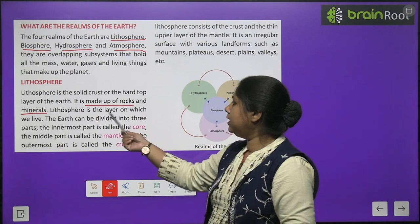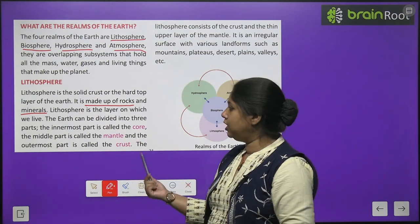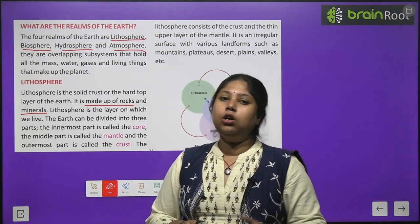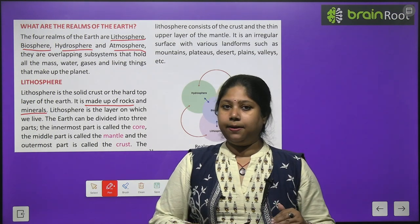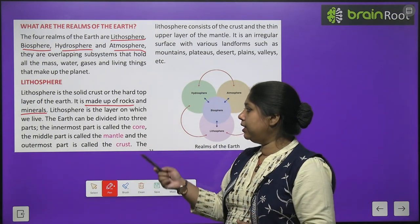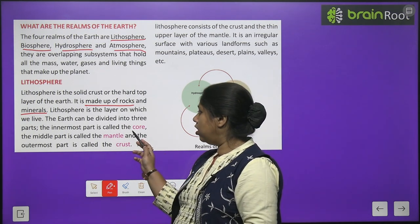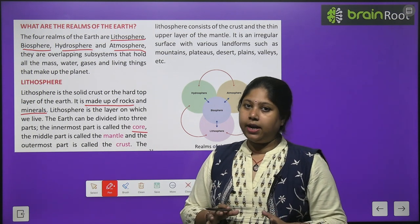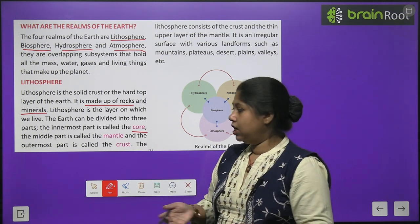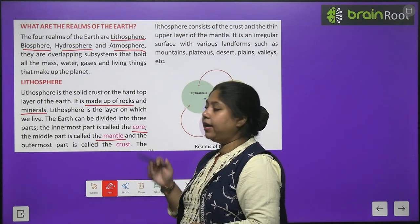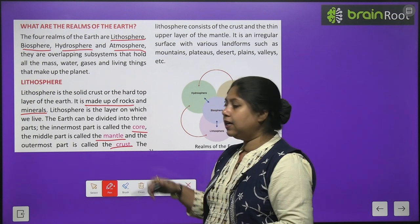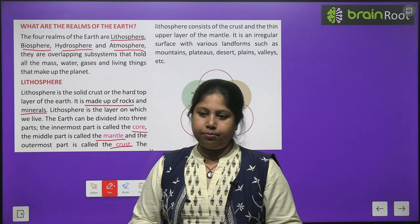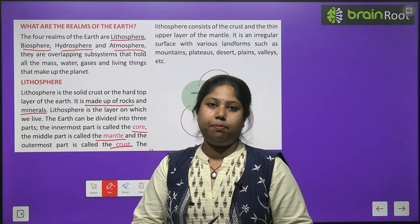The Lithosphere is the layer on which we live. The Earth can be divided into three parts. The innermost part is called the core — it is very very hot. Then comes the middle part called the mantle. And the outermost part is the crust — the rocky part on which we basically live. All our land is part of the crust.